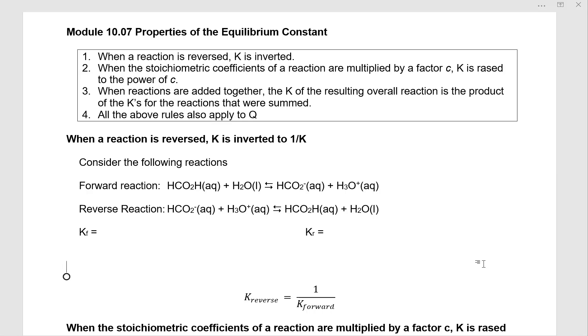Seven properties of the equilibrium constant. So there are four rules that we're going to go through. One, when a reaction is reversed, K is inverted. Two,